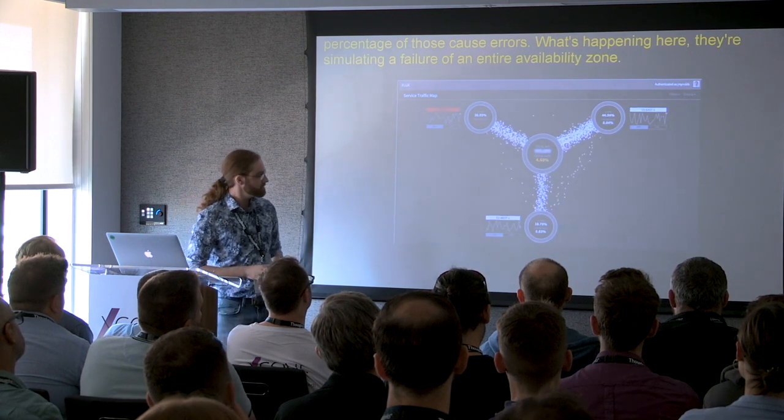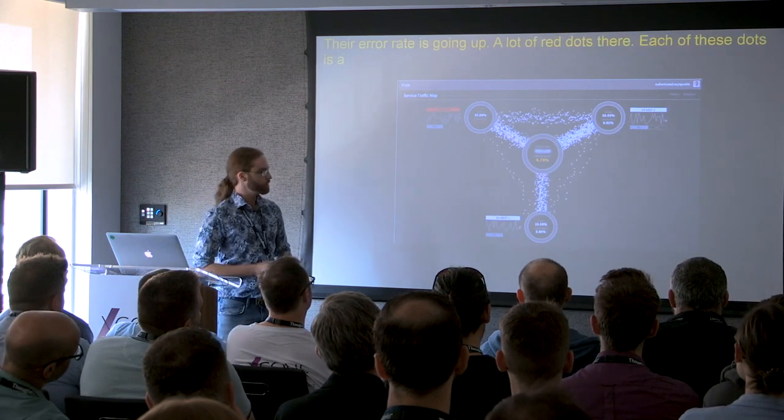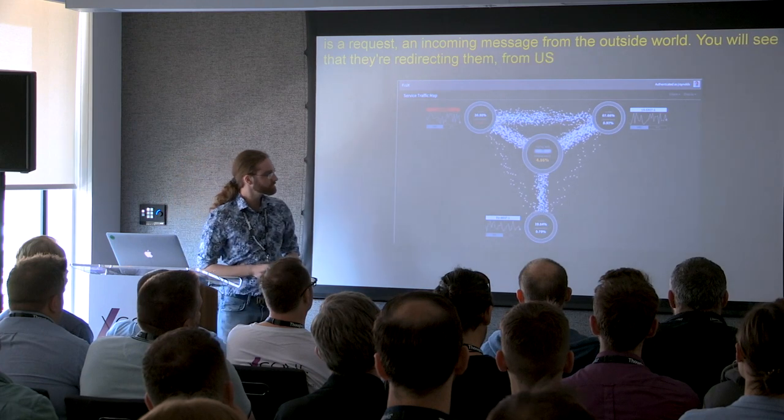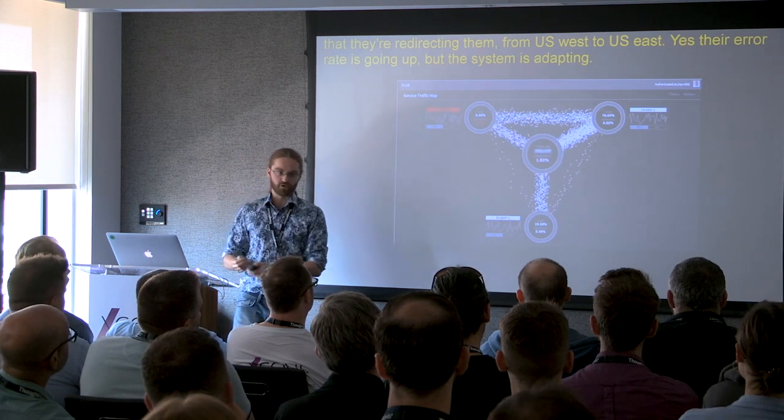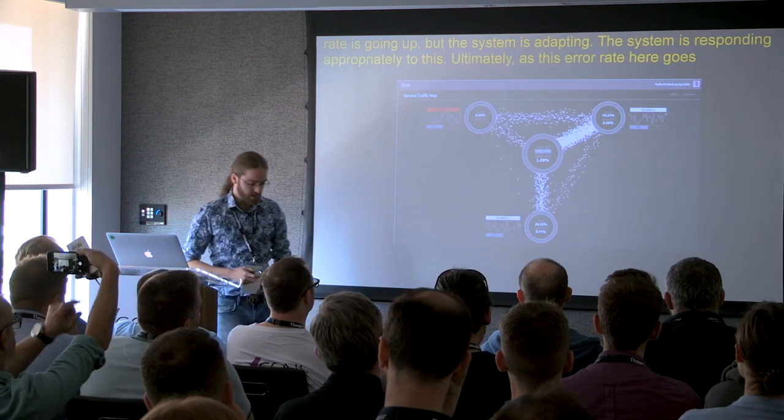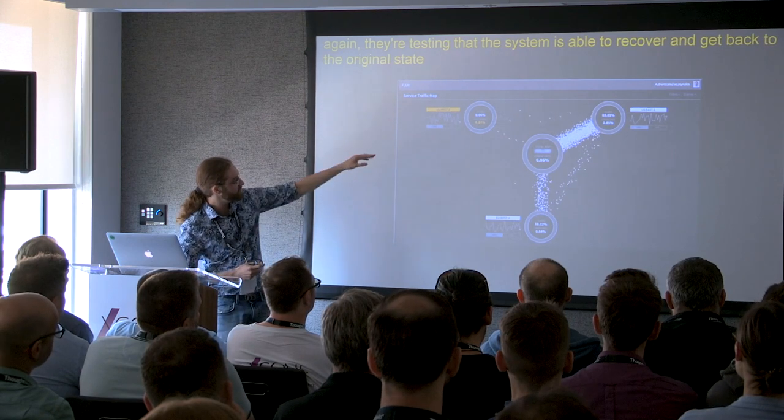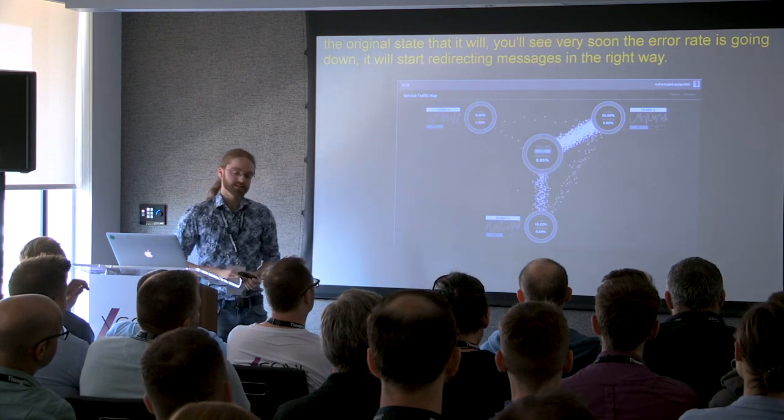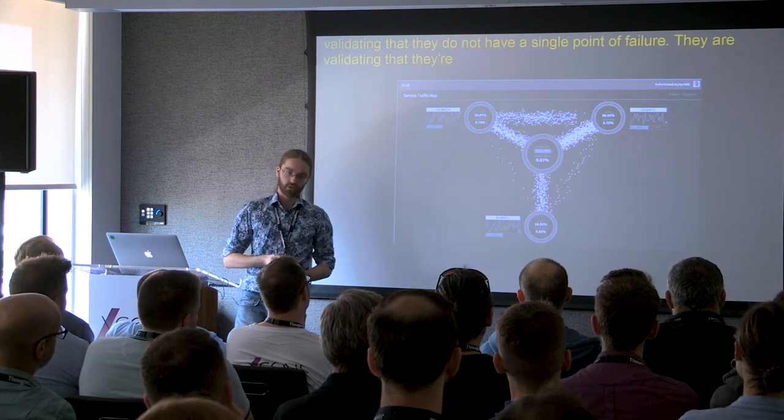See, it's going red here and their error rate is going up. You see a lot of red dots there—each of these dots is a request, an incoming message from the outside world. You'll see that they're redirecting them, redirecting from US West to US East. Yes, their error rate is going up, but the system is adapting, responding appropriately to this. Ultimately, as this error rate goes down again, they're testing that the system is able to recover and get back to its original state. They're validating that they do not have a single point of failure, that they're building a system able to respond to failure appropriately.